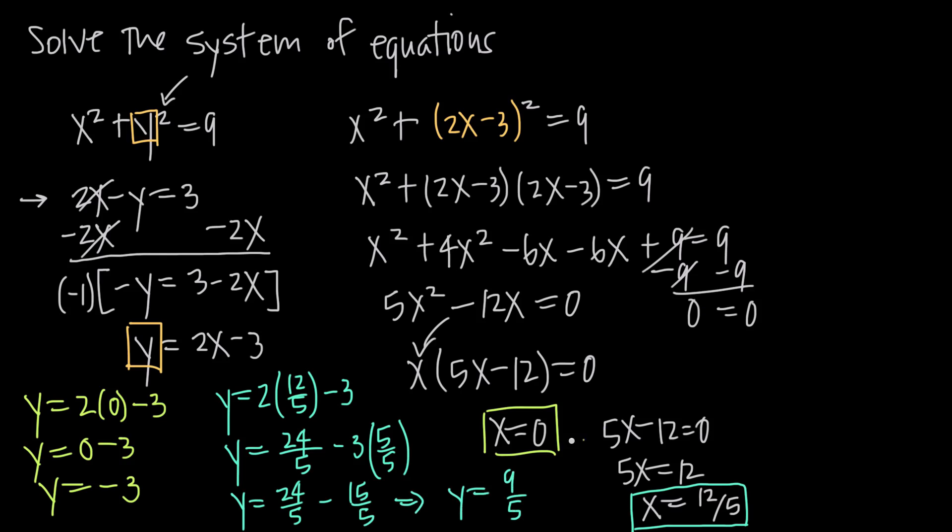Now I can say I have the solution points x equals 0 and y equals negative 3. So 0, negative 3 or x equals 12 fifths, y equals 9 fifths. So 12 fifths, 9 fifths. I should be able to plug both of these points into this linear equation here 2x minus y equals 3 and get a true equation. So if I do that, if I plug in the point 0, negative 3 to this linear equation here, I have 2x minus y equals 3. So I'm going to get 2 times 0 when I plug in 0 for x minus y or minus negative 3, which is going to be a plus 3 is equal to 3. I'll get 0 plus 3 equals 3 or just 3 equals 3. So that's going to check out. This solution checks out in our linear equation.